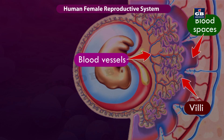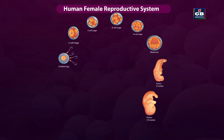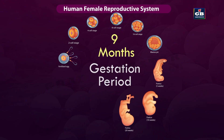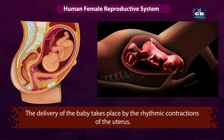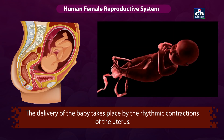Here, nutrients and oxygen are absorbed and wastes are released into the mother's blood. The development of the baby inside the mother's womb takes approximately 9 months. This period is called the gestation period. The delivery of the baby takes place by the rhythmic contractions of the uterus.